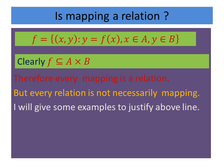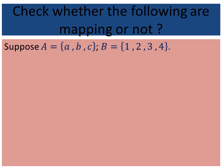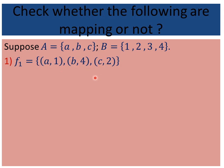Now I will give some examples. Here I give two non-empty sets: A contains three elements {a, b, c} and B contains four elements {1, 2, 3, 4}. The first example: F1 = {(a,1), (b,4), (c,2)}. Is F1 a mapping? Yes, because every element of A — a, b, and c — participates in the relation, and the images of a, b, c are unique: image of a is 1, image of b is 4, image of c is 2. Therefore this is a mapping.